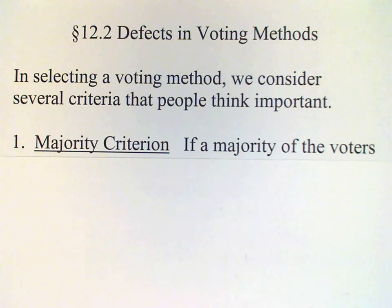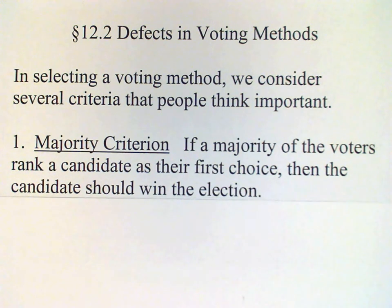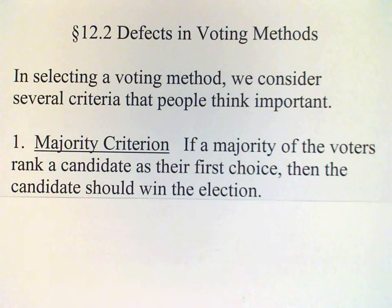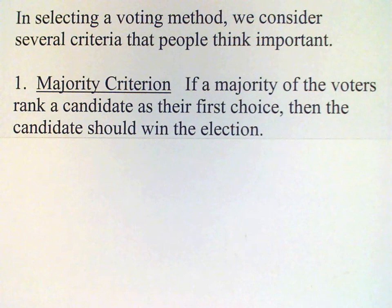So in selecting a voting method, there are several criteria that people think important. The first one is known as the majority criterion, which says that if a majority of the voters rank a candidate as their first choice, then that candidate should win the election. Under a plurality system or pairwise comparison system, the majority criterion is satisfied.